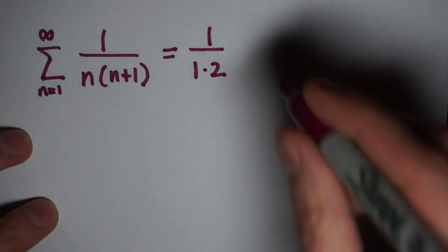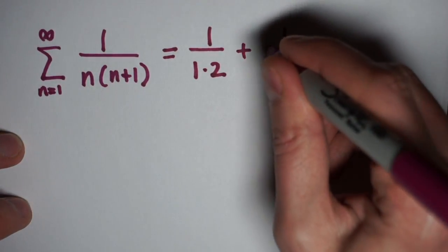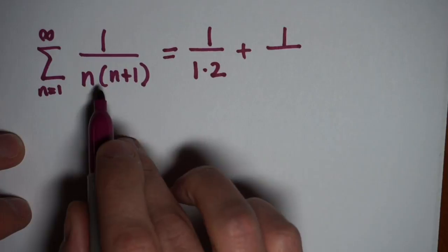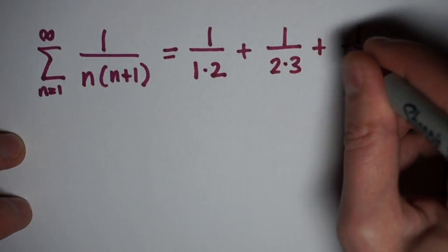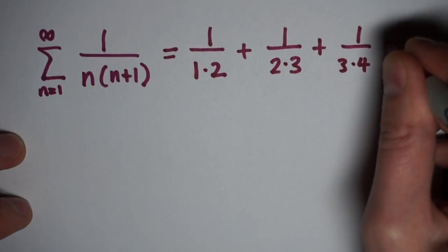So if I write out the first couple of terms, my first term is going to be n equals 1, which will be 1 over 1 times 2, n equals 2 is going to give me 1 over 2 times 3, and the next one will be 1 over 3 times 4, and so on from here.